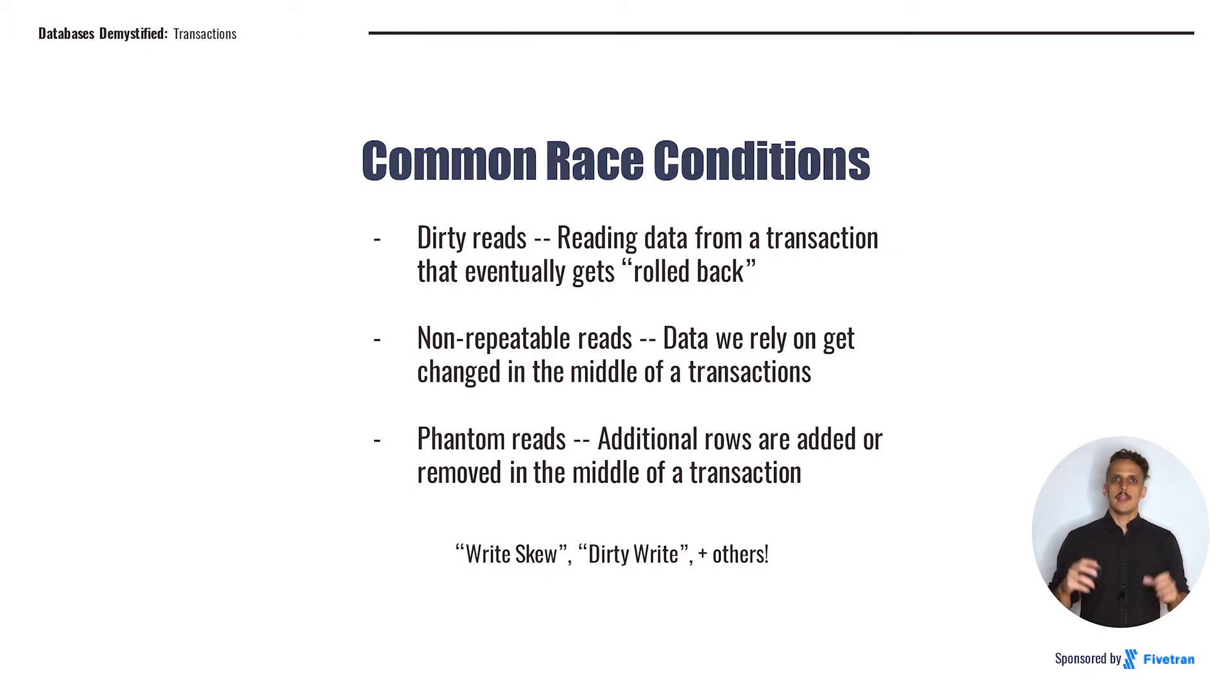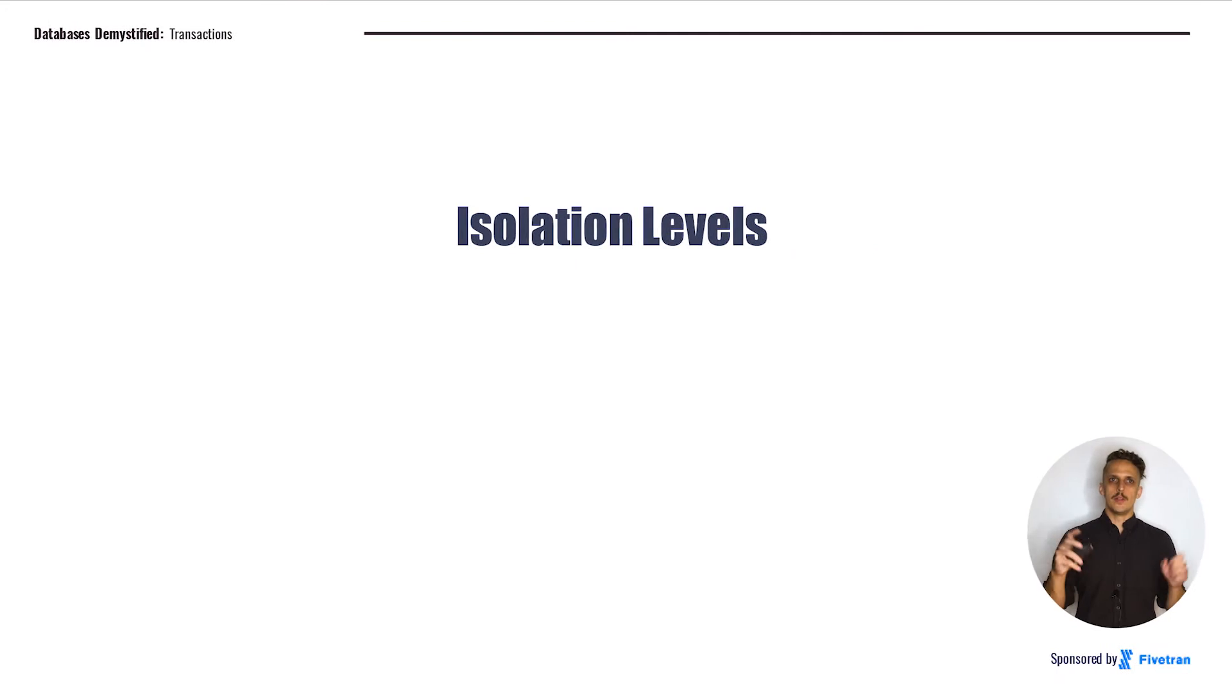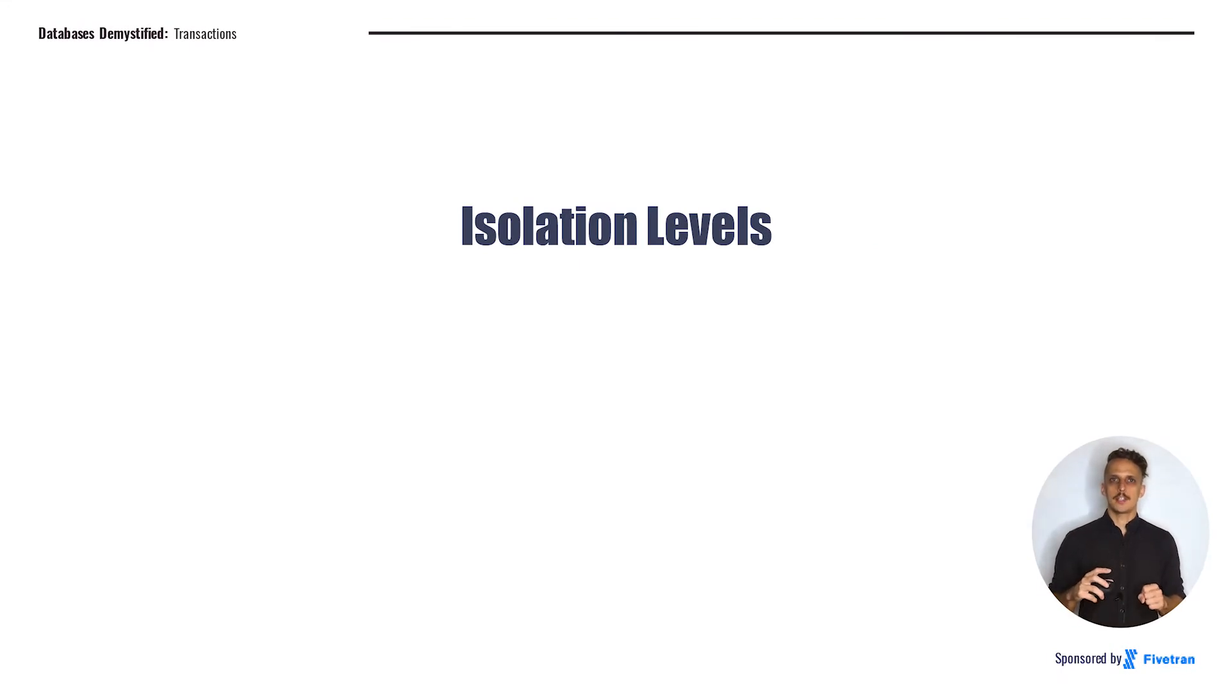This can be very problematic, and it can cause really nasty bugs that can be particularly painful to fix because they both happen infrequently and they tend to violate people's mental models of what their applications are doing. So in databases, we have these things called isolation levels, and again, this matches up to the I in ACID. We talked about this a little bit in the last class. Isolation helps databases prevent race conditions. The more isolation that we have, the fewer race conditions we'll have, and the fewer of these bugs we'll encounter.